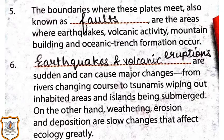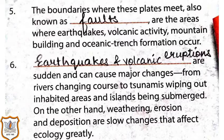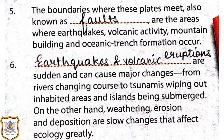Fifth, the boundaries where these plates meet, also known as faults, are the areas where earthquakes, volcanic activity, mountain building, and oceanic trench formation occur. Sixth, earthquakes and volcanic eruptions are sudden and can cause major changes — from rivers changing course to tsunamis wiping out inhabited areas and islands being submerged. On the other hand, weathering, erosion, and deposition are slow changes that affect ecology greatly.